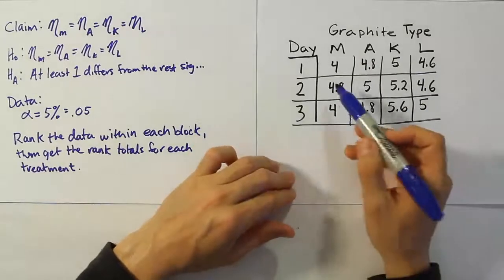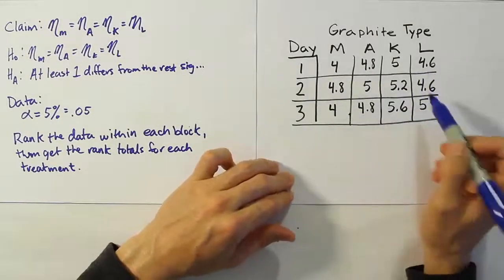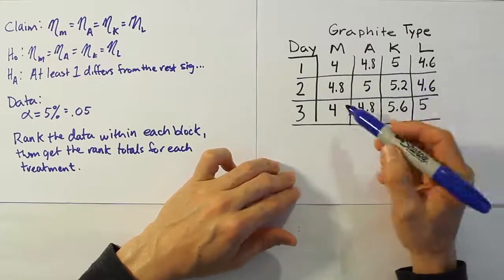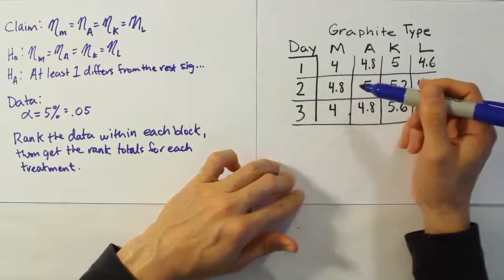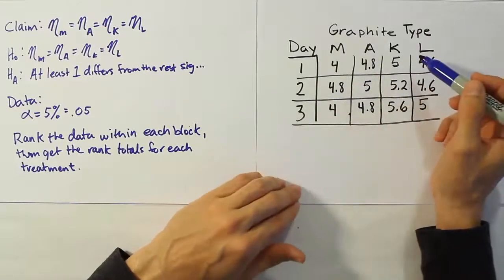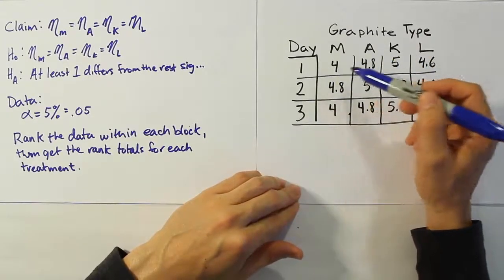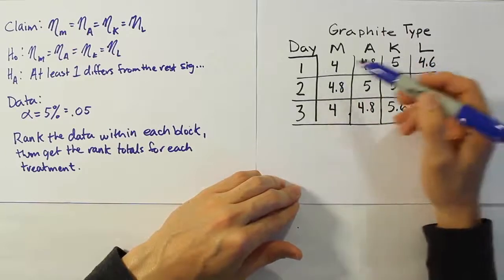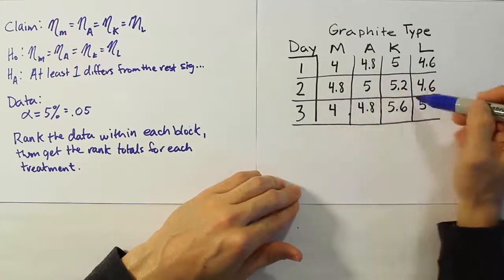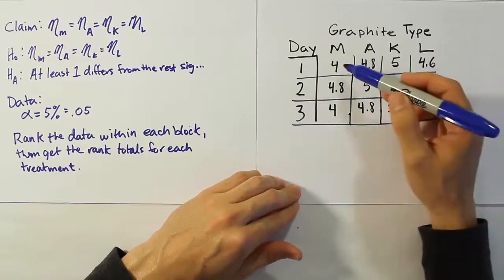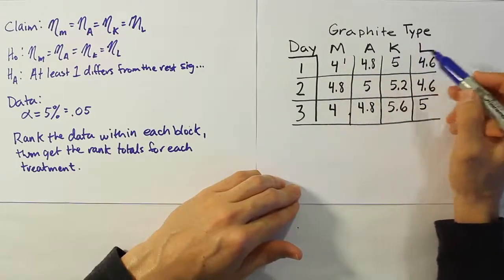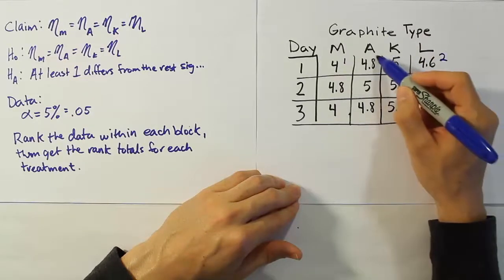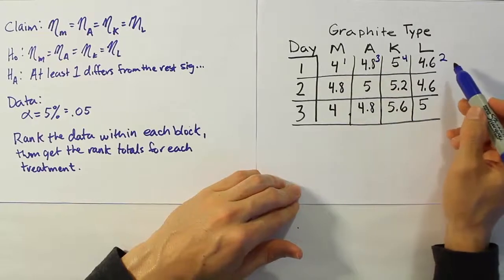So I've just copied the data over in this little grid here just to make it easier for me to be able to write my ranks in the space provided. But you can, of course, write it right on the paper there itself. It makes no difference. All right, so what we want to do is rank right across the rows because the blocks are these days, one, two, and three. So we're going to rank them right across. And of course, we start out with the smallest value being rank one, the next smallest value being rank two, and then three, and then four. So it's nice and easy to rank with such a small number of values.